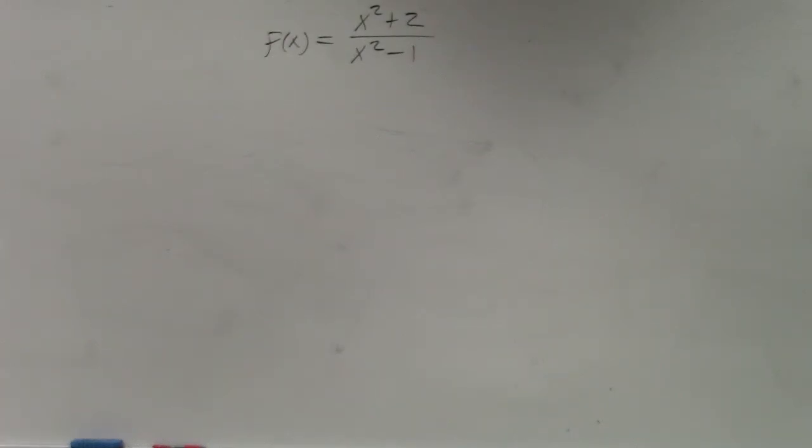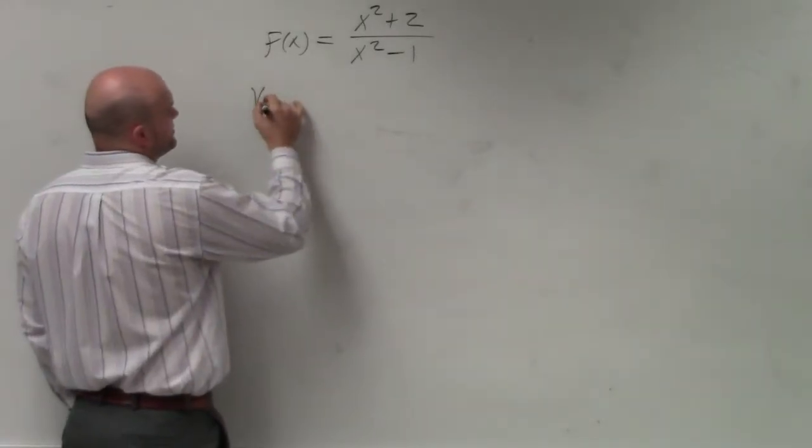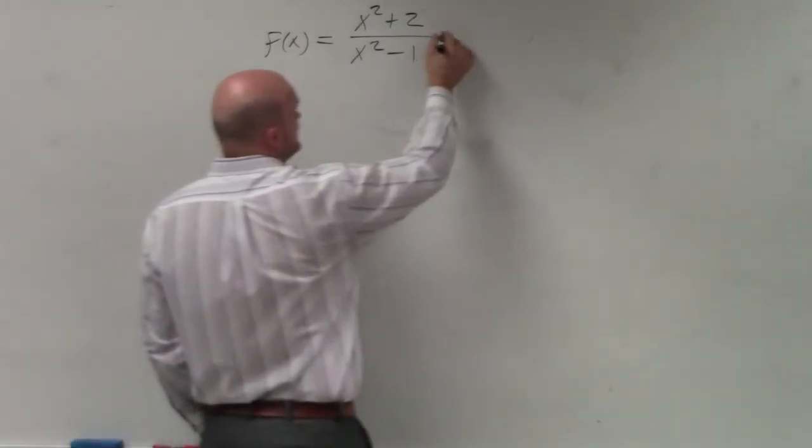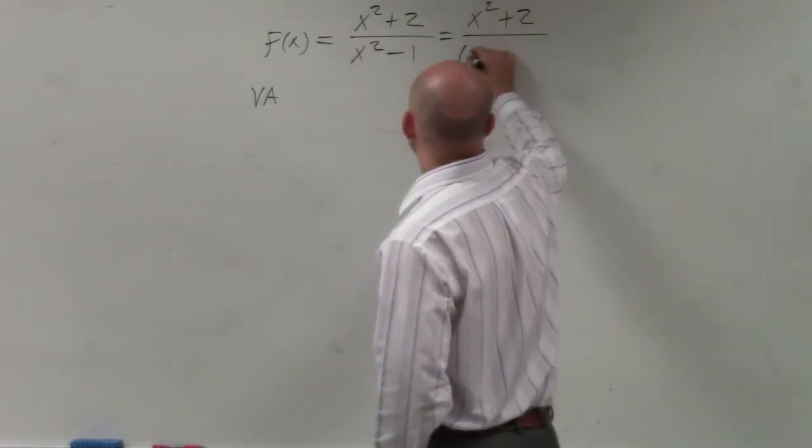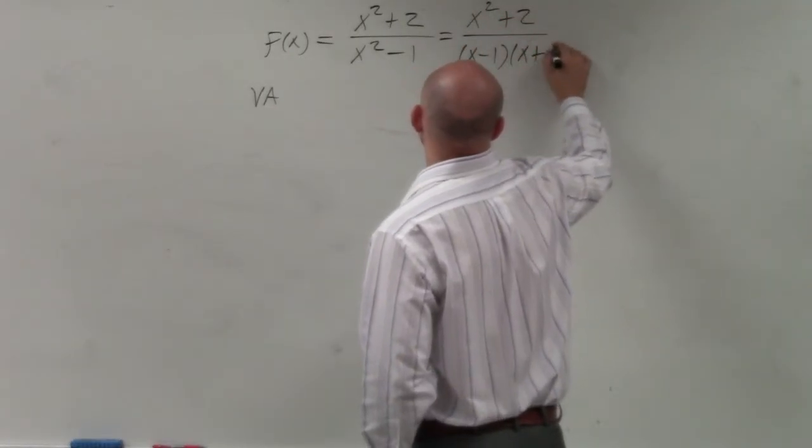To identify the vertical asymptotes, the easiest thing to do is to see if we can factor anything. The numerator cannot be factored. The denominator can be factored into x minus 1 times x plus 1.